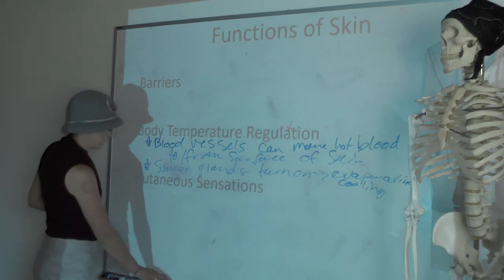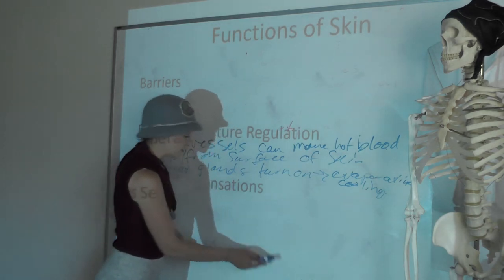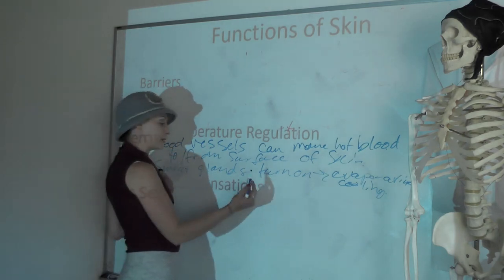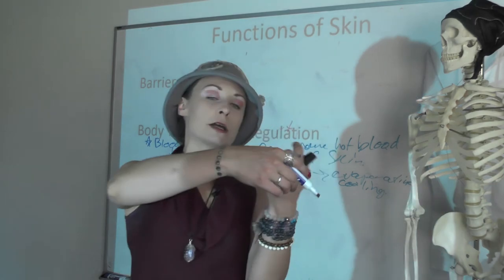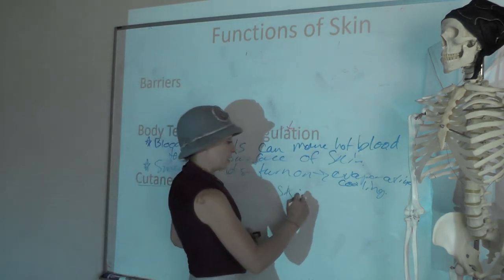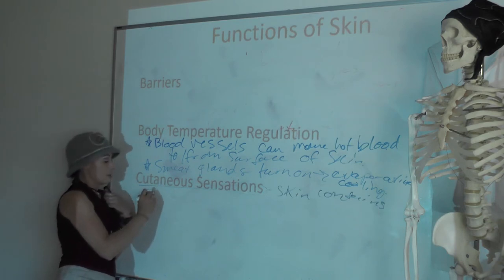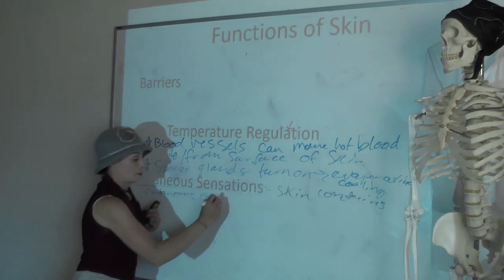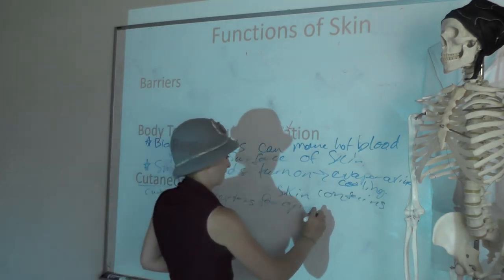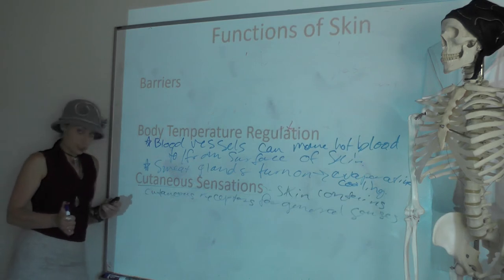The skin also provides cutaneous sensations. Your cutaneous membrane contains sensory receptors for the general senses — light pressure, hair follicle receptors detecting when a bug lands on your arm or a breeze blows your hair, pain, temperature. Your skin contains cutaneous receptors for the general senses: pain, pressure, touch, vibration, heat — everything that's not a special sense.